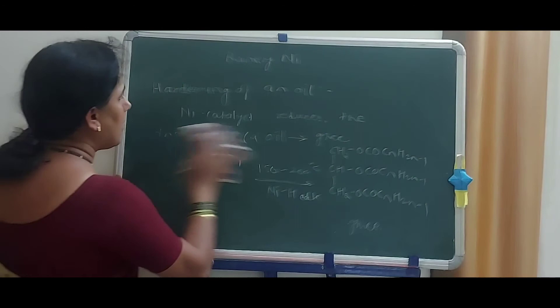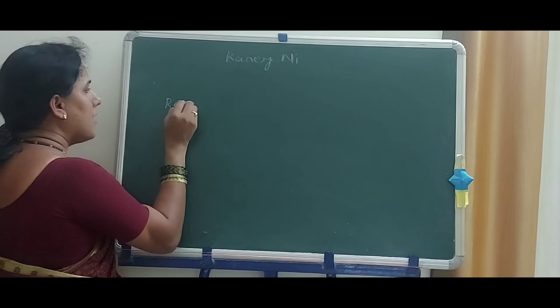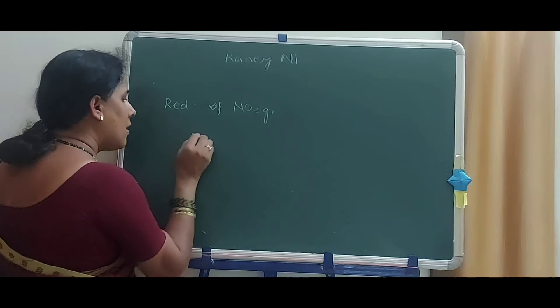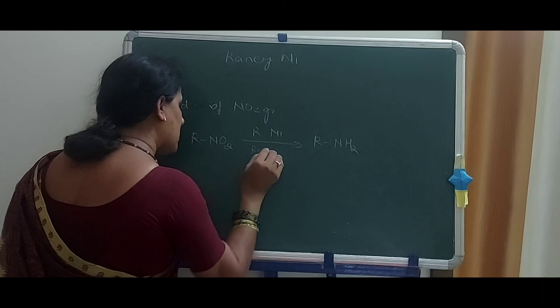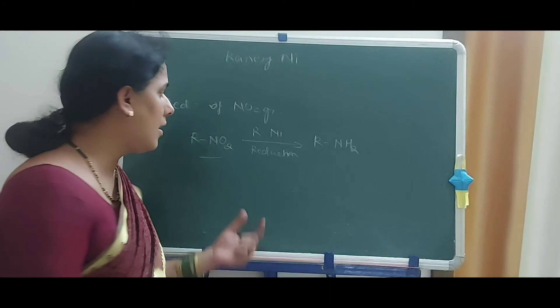The last reduction discussed is the reduction of the nitro group. Ar–NO2 with Raney Nickel as a catalyst undergoes reduction, and the NO2 group is replaced by the NH2 group. Thus we have concluded all functional groups — from alkenes, benzene, phenol, naphthalene, cyanides, nitrides, ethers, acyl chlorides, halides, and thiols.